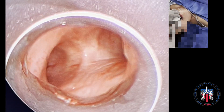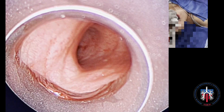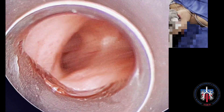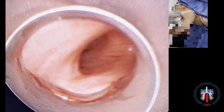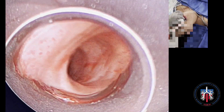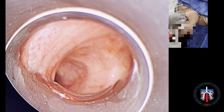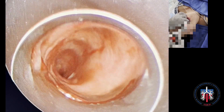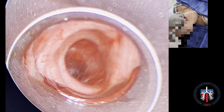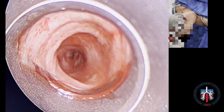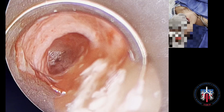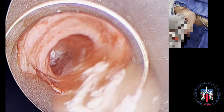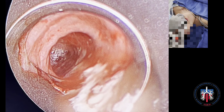We enter the left main bronchus by sidebending and rotating the patient's head towards the right and rotating the scope clockwise, gently lifting the left lateral bronchial wall with the bevel as the scope is advanced into the left main bronchus. The rigid bronchoscope is rotated clockwise until the bevel of the scope is against the posterior wall.